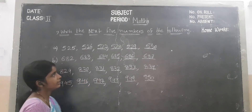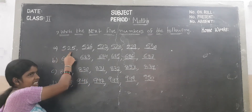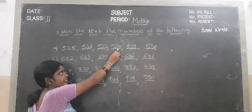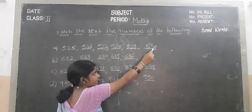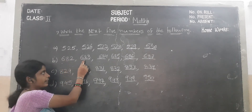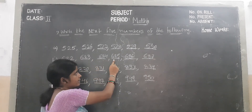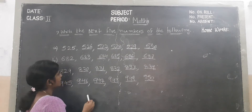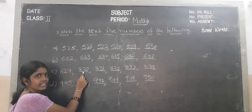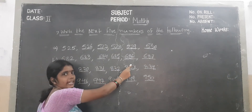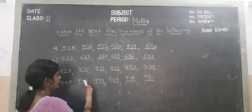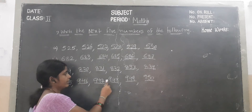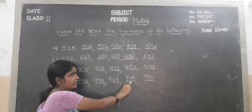Okay, 1051. Number 1 sum — 525. The next numbers are 526, 527, 528, 529, 530. Next — 682, 683, 684, 685, 686, 687. Next — 829, 830, 831, 832, 833, 834. Next — 945, 946, 947, 948, 949, 950.